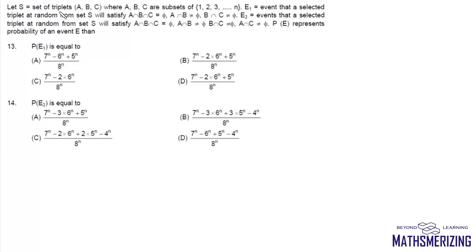Now here are the questions. Let S be the set of triplets (A, B, C) where A, B and C are subsets of {1, 2, 3, ..., N}. Let E1 be the event that a selected triplet at random from set S will satisfy A∩B∩C = ∅, A∩B ≠ ∅, and B∩C ≠ ∅.